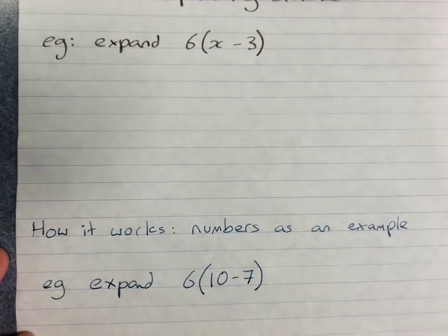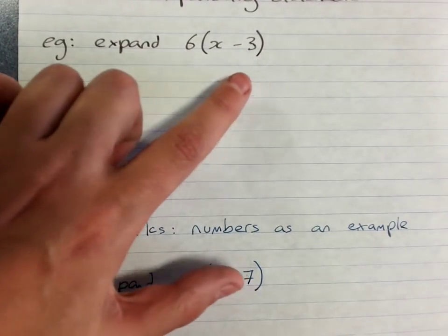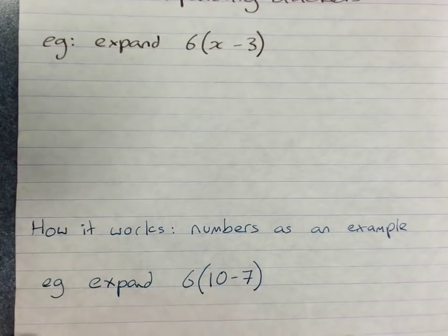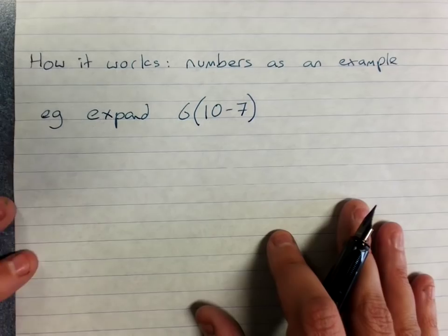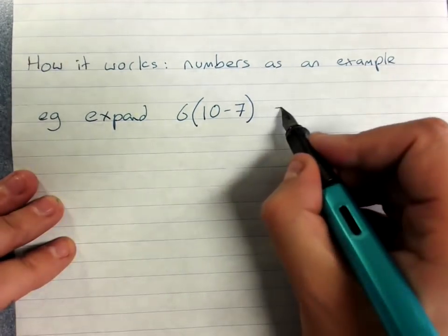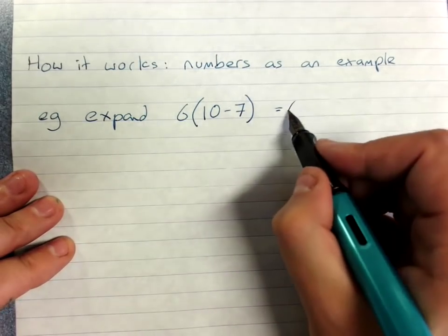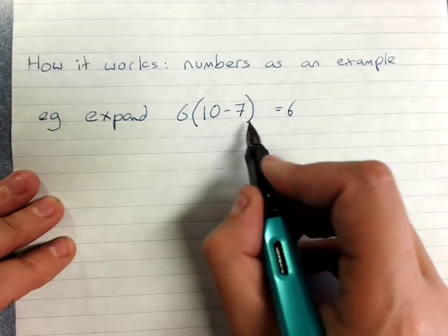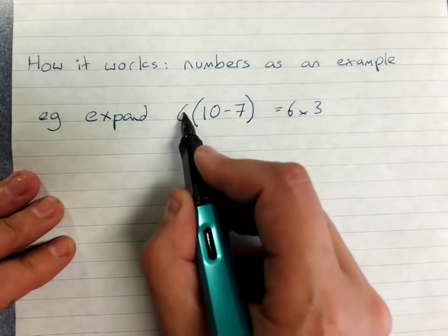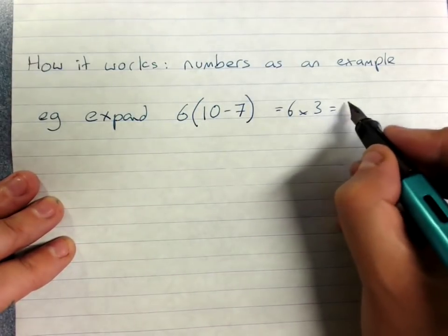Now you can actually see that's pretty similar to this question. I've got a number outside the brackets and I've got a sum, a subtraction inside the brackets. You know order of operations says we do the sum in the brackets first, so let's do it this way. That would be 6 times, do the sum 10 minus 7 is 3, so 6 times 3 is 18.